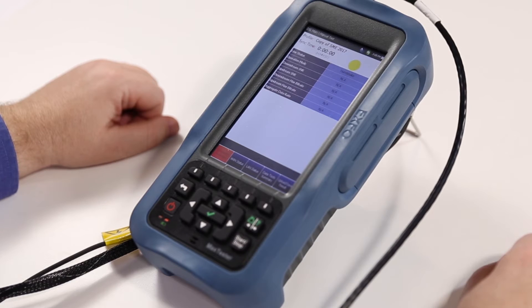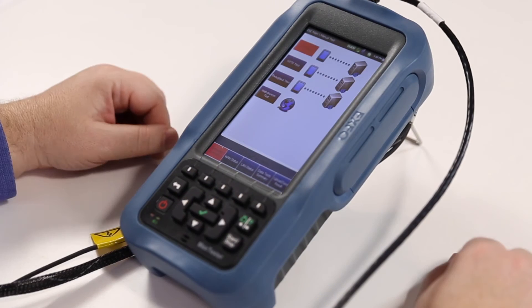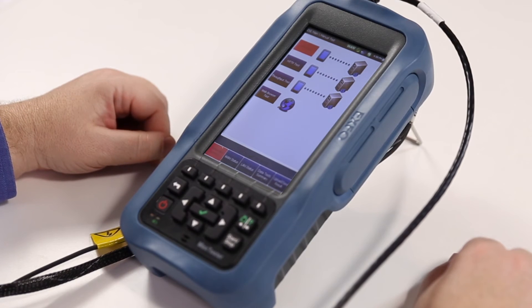we will then be able to move into the DSL test summary page where we will have access to the Ookla speed test powered solution. Selecting the DSL test summary tab, you will notice the throughput testing button.